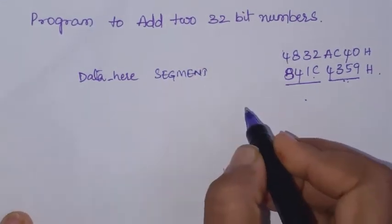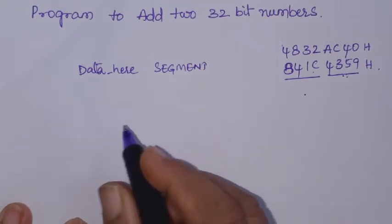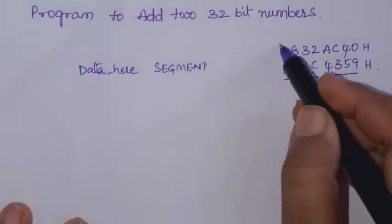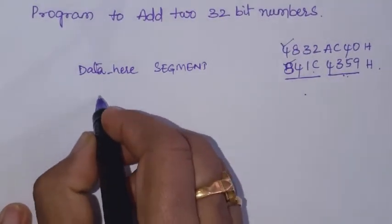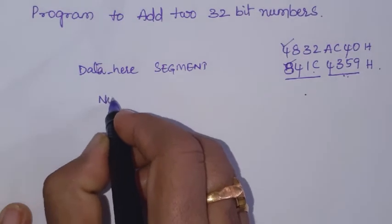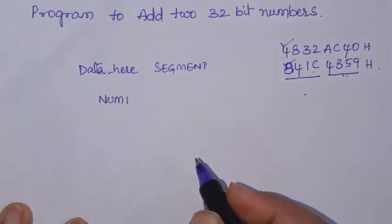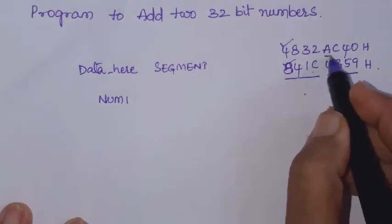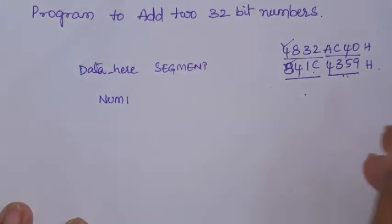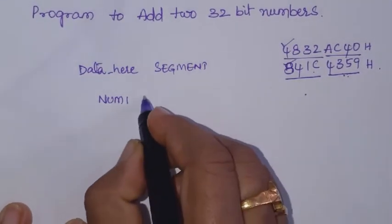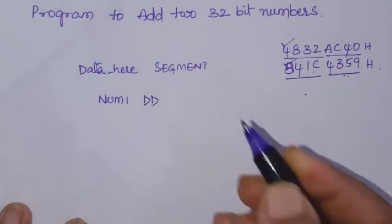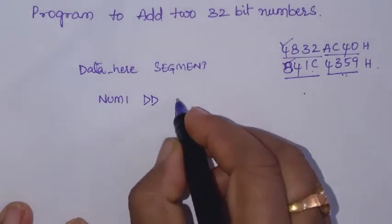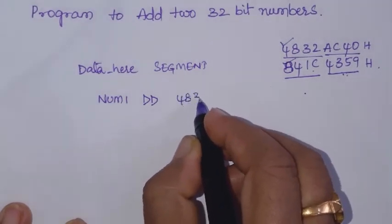Then declare the variables. Here I need these two numbers. Let us name them as number one. It is a double word, so you can declare it as a double word data type and then write this number.